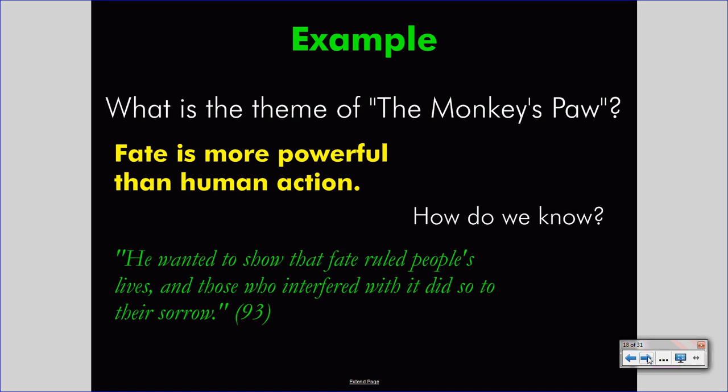This is a bit of dialogue from page 93 in your textbook. The Sergeant Major is speaking about the Indian fakir who gave him the monkey's paw. The fakir wanted to show that fate ruled people's lives, and those who interfere with it did so to their sorrow. This dialogue introduces an important concept — fate — and helps us begin to build the theme.